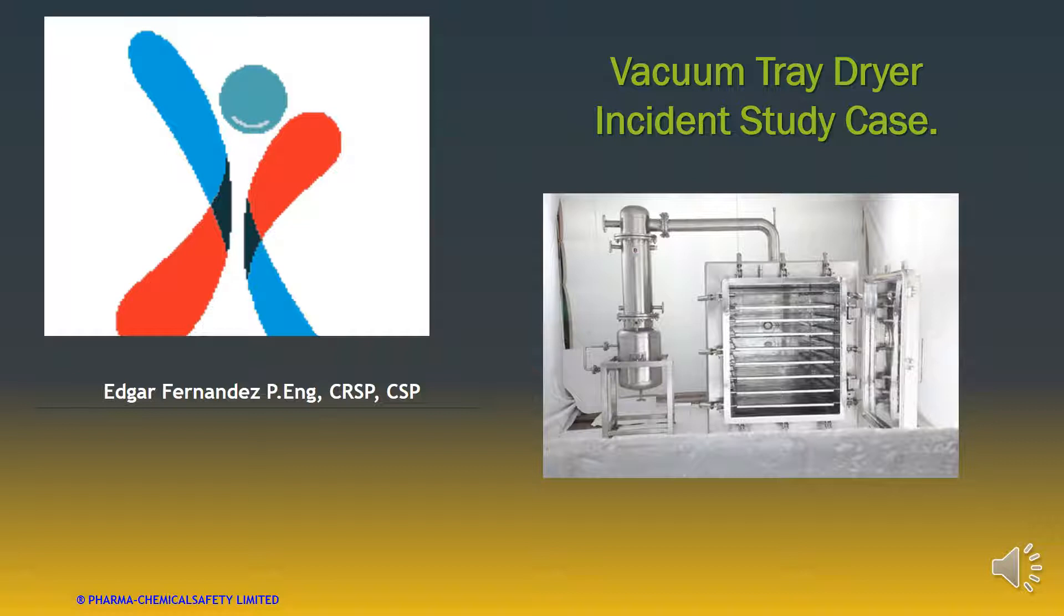The XYZ company created a team to investigate the root causes to prevent the recurrence of these incidents. The team found the following. The primary reason was static electricity that acted as a source of energy to complete the fire triangle. The vapors of toluene is a fuel, the static is a source of energy, and oxygen is the element that always is present.